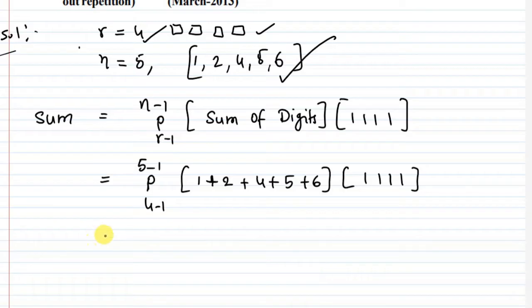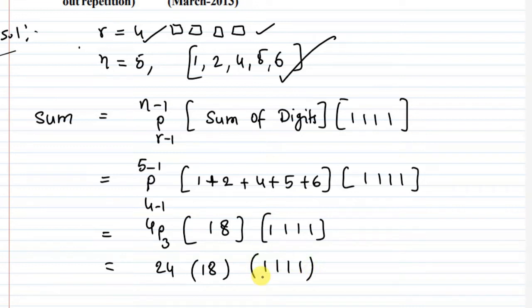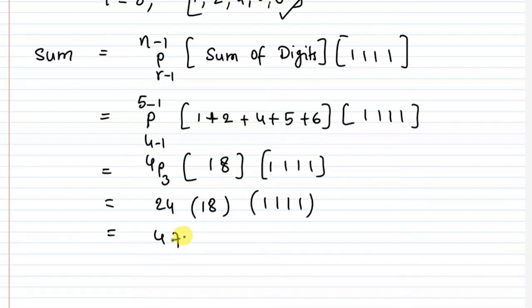Now 5 minus 1 equals 4, 4 minus 1 equals 3, into 6. We get 4P3 equals 24. So 24 times 18 times 1111, that's 4 times, equals 479952.